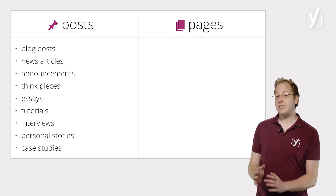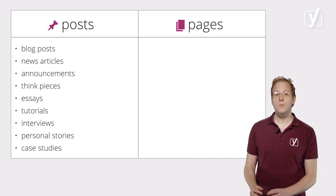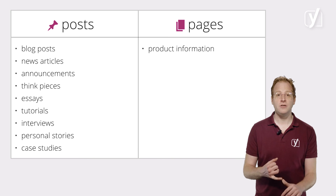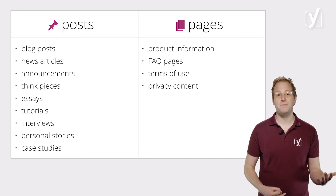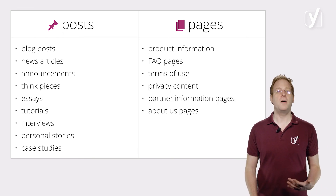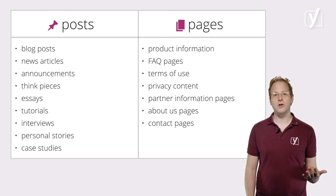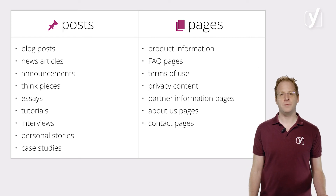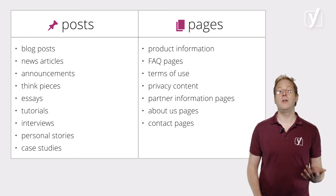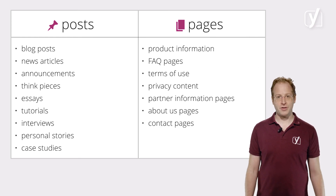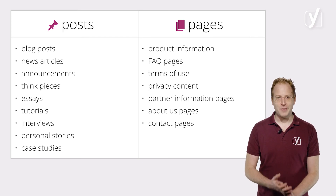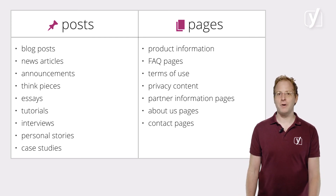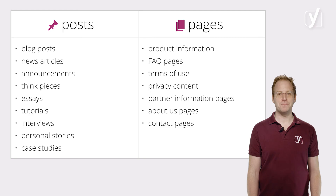And these types of content are usually pages: product information; FAQs; terms of use; privacy pages; partner information; About Us pages; and contact pages. There are a lot more possibilities, but I'm sure you get the point. Now onto the next video, in which we show you exactly how to write your posts and pages.